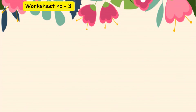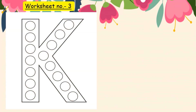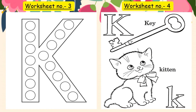Worksheet number 3 — in this worksheet you have to dab colours inside the circles. You can use any colour of your own choice. Worksheet number 4 — K for Kite, K for Kitten. You have to colour the letter K and the pictures starting with letter K.